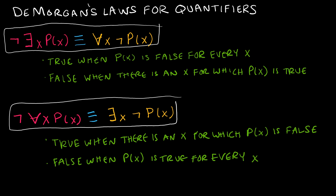De Morgan's laws for quantifiers work as follows: 'not there exists some x such that p(x)' is equivalent to 'for all x, not p(x)' — that statement is true when p(x) is false for every x, and false when there is an x for which p(x) is true. Similarly, 'not for all x, p(x)' is the same as 'there exists some x such that not p(x) is true' — true when there is an x for which p(x) is false, and false when p(x) is true for every x. These two quantifiers are essentially opposites when translating and negating.